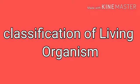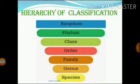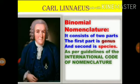Classification of living organisms — hierarchy of classification: 1st is Kingdom, 2nd is Phylum or Division, 3rd is Class, 4th is Order, 5th is Family, 6th is Genus, and 7th is Species.